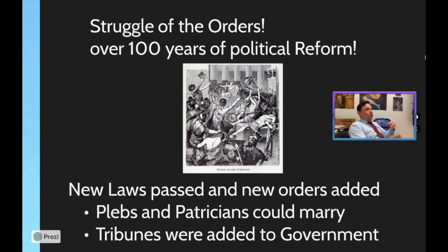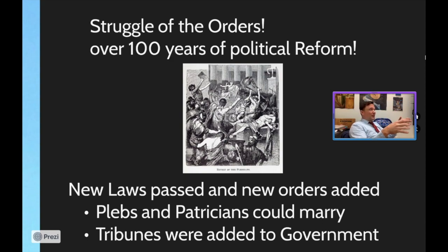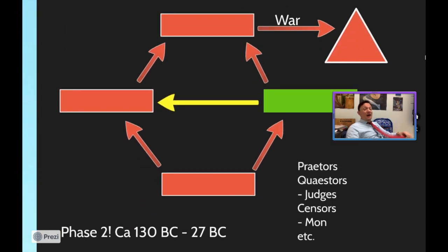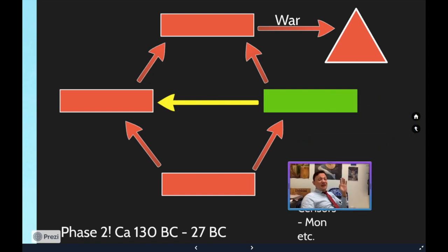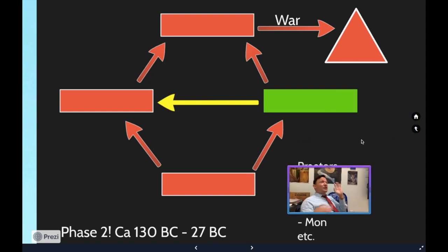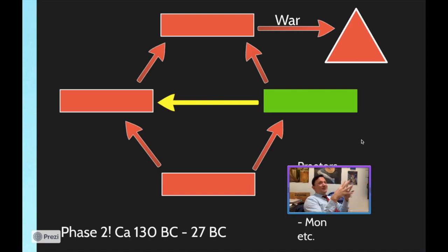Over time you're going to see some famous plebes rise up, and a new group is going to be added to the government — basically the plebeian version of the Senate — known as the tribunes. This is the second phase of the Roman government, the post-struggle-of-the-orders phase. You're going to need to draw this in your notes as well, because all of this is in the fill-in-the-blank section on your test. Go ahead and hit pause.